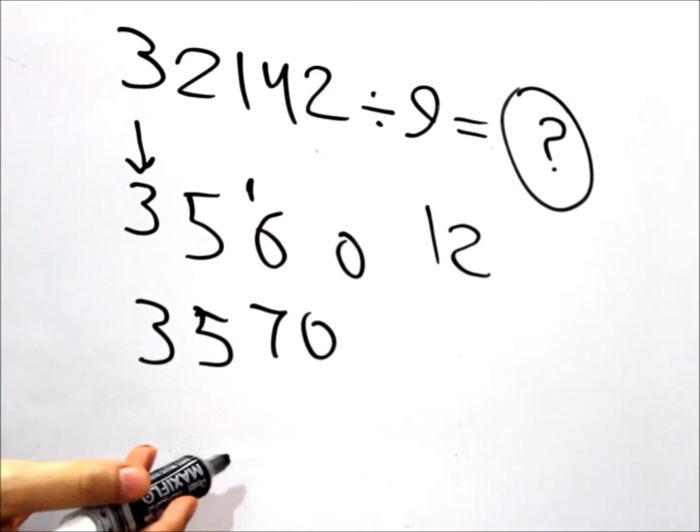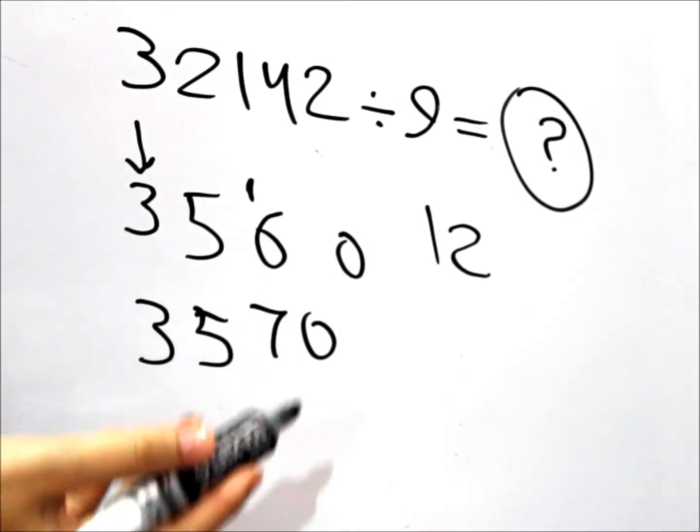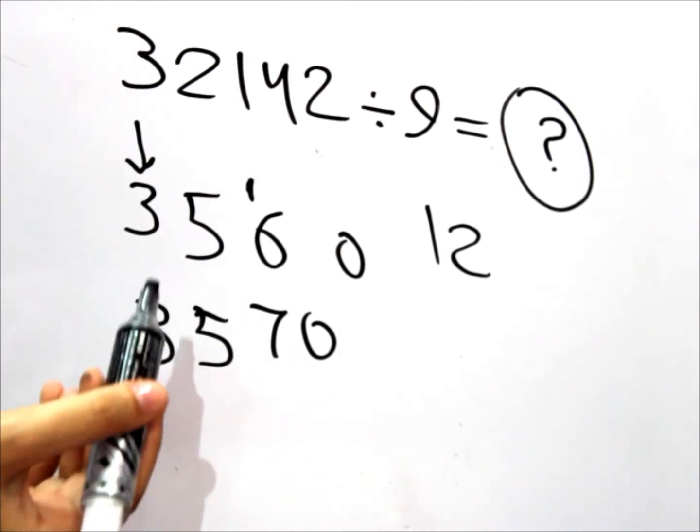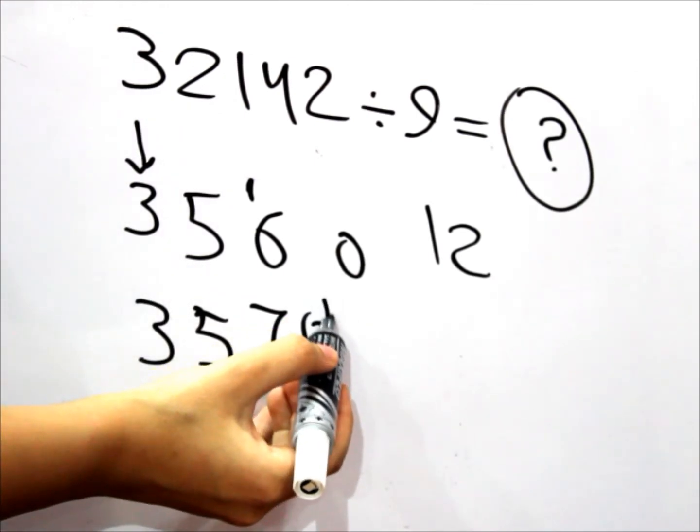But as you can see, it has a remainder. And that's 12. It's a big number. So how many 9s are there in a 12? Just 1. So we're adding the 1 with the 0.